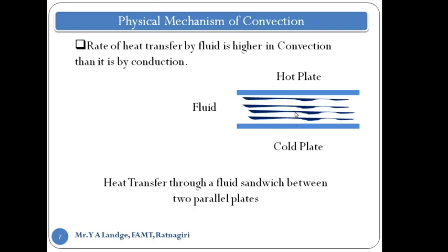In the conduction case, as per the definition of conduction, heat transfer takes place layer by layer. The hot surface gives heat to the first layer nearest to the surface, which then gives heat to the next adjacent layer, and so on until it reaches the cold fluid. This is the case when the fluid is at steady state with no motion, and more time is required because heat is transferred layer by layer.